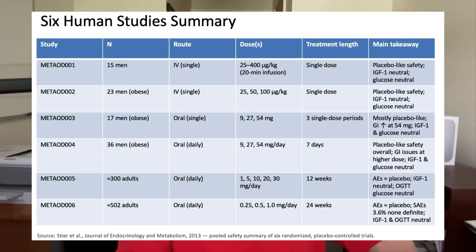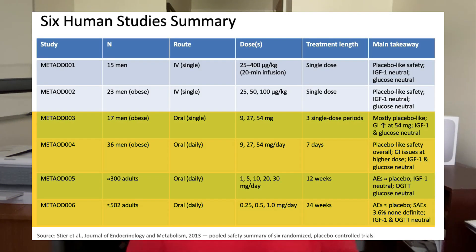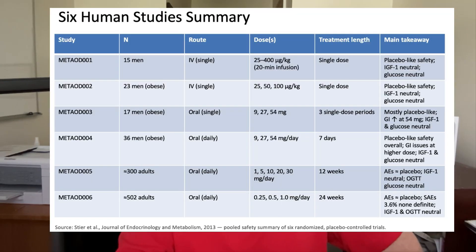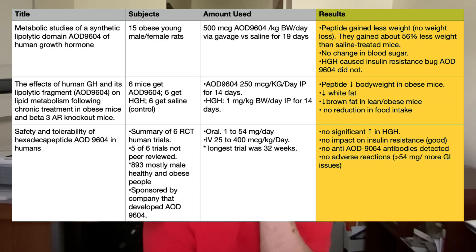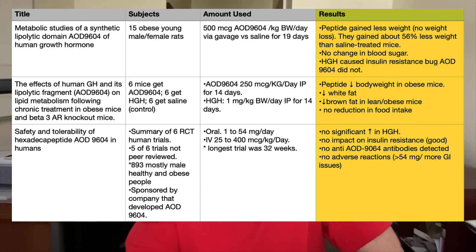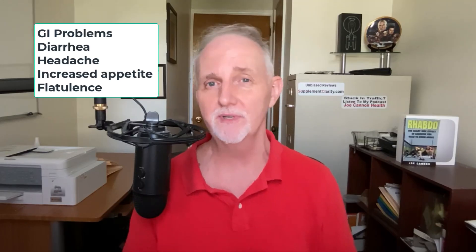Here's a summary of those six clinical trials. Four of those investigations involved oral AOD 9604 and two involved injections. None involved topical peptide use. Dosages in the oral studies ranged from as low as a quarter of a milligram per day all the way up to 54 milligrams per day. From the table I created summarizing this research, the peptide doesn't appear to have any serious reactions, though GI distress may occur above 54 milligrams per day. Other reported side effects include headache and fatigue, though given the lack of human research, that's open to speculation.